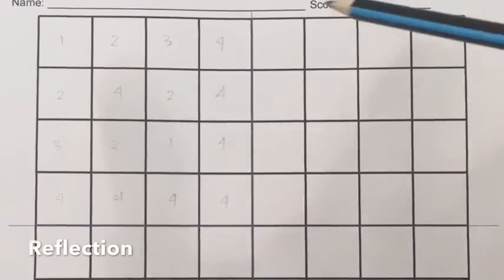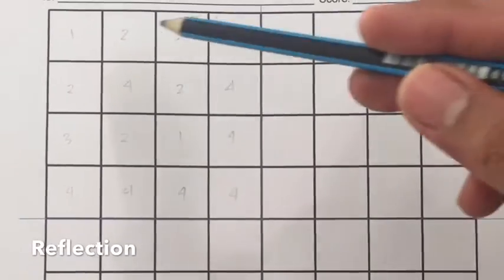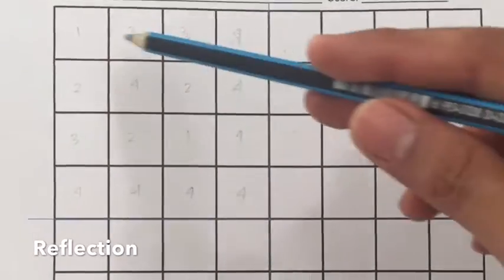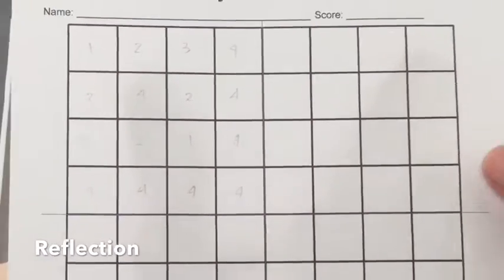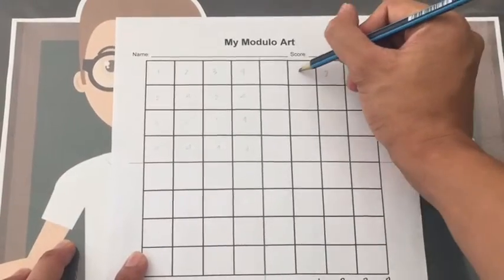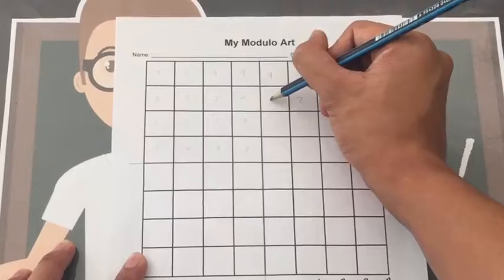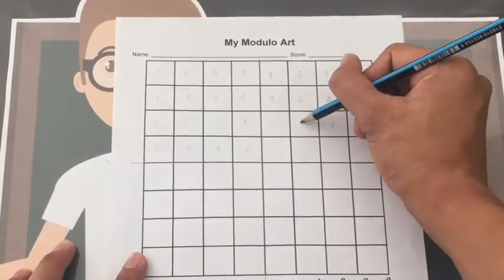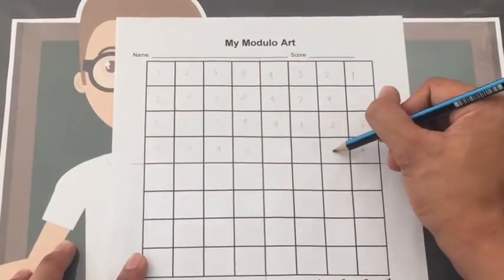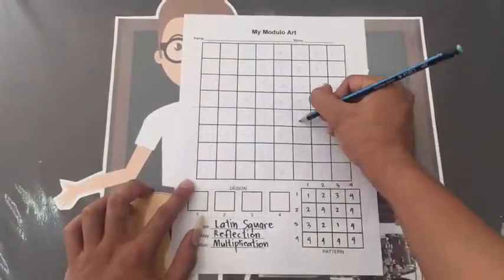Put the pattern on the first quadrant. The pattern on the second quadrant is just a reflection of the first quadrant. The pattern at the bottom is just a reflection of the top.